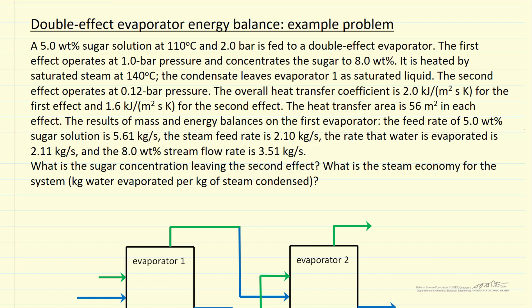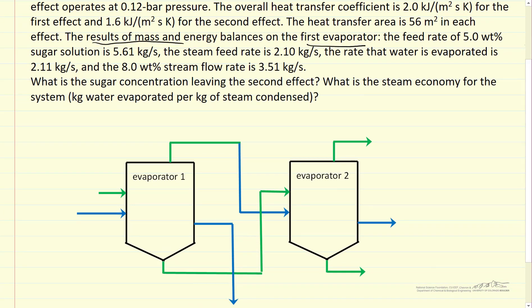And then we report the values here that are obtained from those calculations. So here are the results from the mass and energy balance in the first evaporator. The question is, we want to determine what's the concentration of the sugar solution leaving the second evaporator, which we're going to call X2 as a mass fraction. And then what's the steam economy, which means we're going to have to determine how much is evaporating per time in the second evaporator. We've already determined how much is evaporating per time in the first.